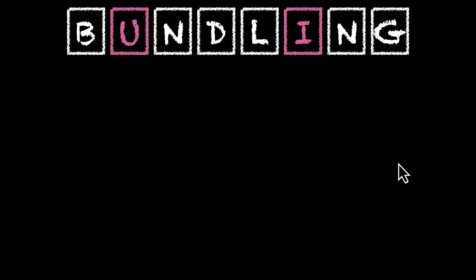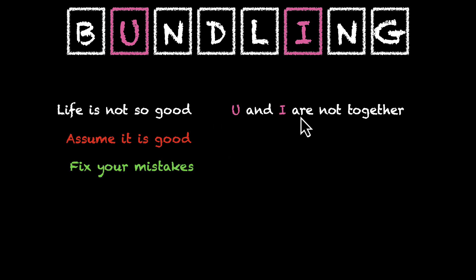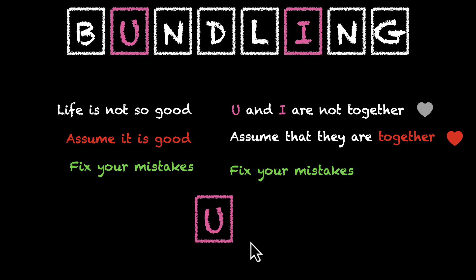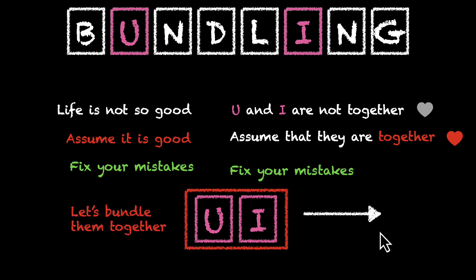Your job is to figure out how U and I can always be together. The approach will be different, but the feeling will be the same. Life is not so good — assume that it is good and then fix your mistakes. So what we have is U and I are not together. That's not good for us. But we can assume that they are together and then we'll fix our mistakes. Now let's bring U and I close to each other. Let's bundle them, bind them together, and form a new letter. Let's call it the bundle of U and I.